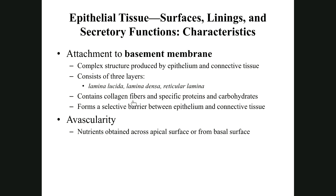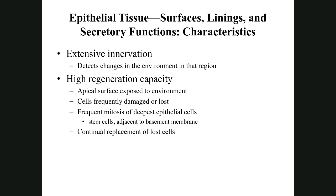The fourth characteristic is avascularity — epithelial tissue does not contain blood vessels. It gets its nutrients from blood vessels in the connective tissue below it. Capillaries in the underlying connective tissue supply the gases and nutrients. Epithelial tissue also has extensive innervation, giving it the ability to sense the environment — touch, vibration, pressure, temperature, and pain.